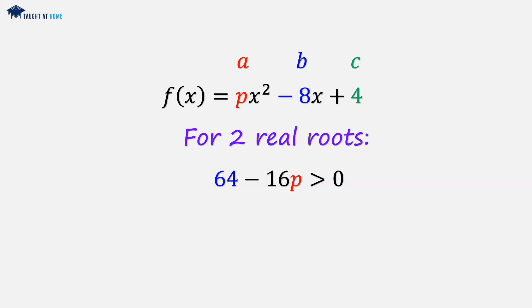We can subtract 64 from both sides, so -16p is greater than -64. We can divide both sides by -16, and remember, because we're dividing by negative numbers, we have to flip the sign. That leaves us p is less than -64 over -16. So for two real roots, p has to be less than 4.